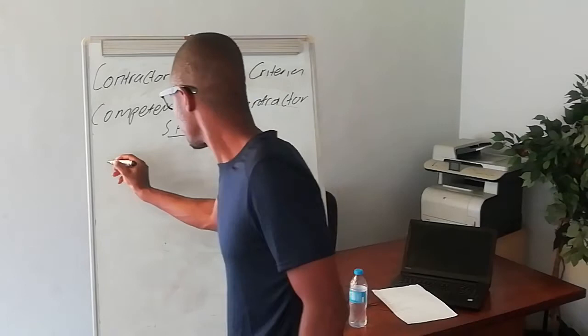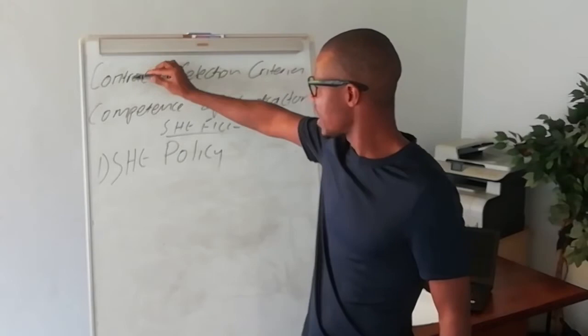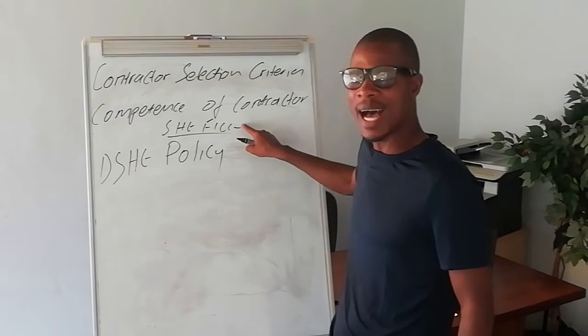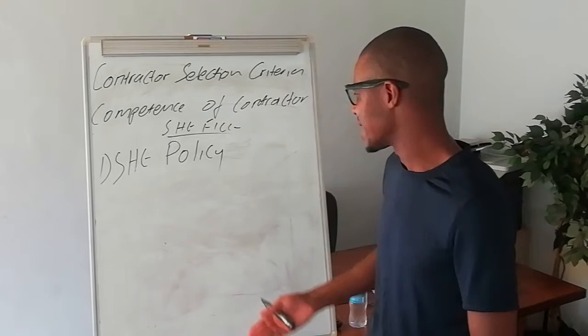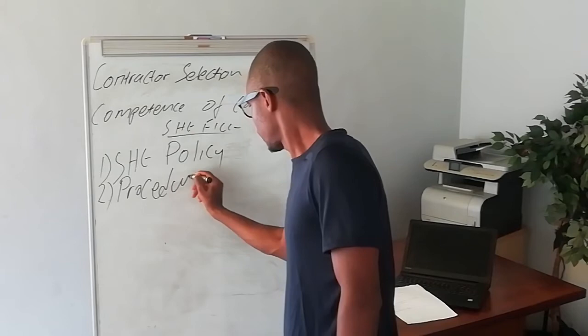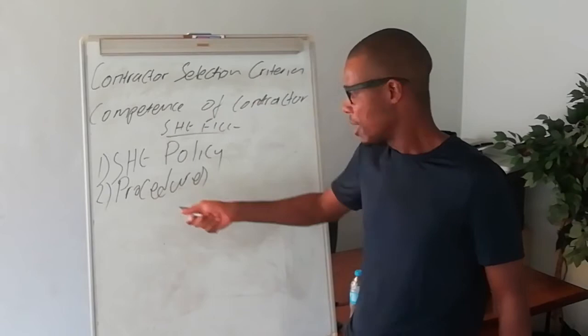On the contractor selection criteria or the competence of a contractor, they want the SHE policy. The SHE policy is also a document that is in our ordinary safety file that we develop as practitioners and submit to the client. We are supposed to put the SHE policy. They also require procedures — operative procedures. These are actually part of the competency required from the contractor or contractor selection criteria, and these documents are also in the safety file.